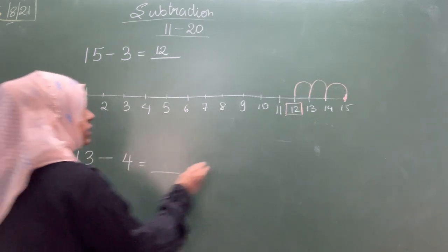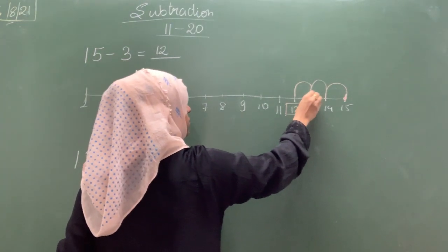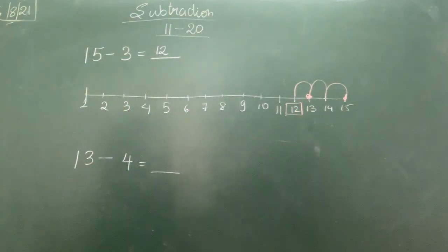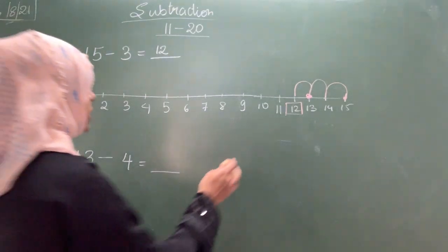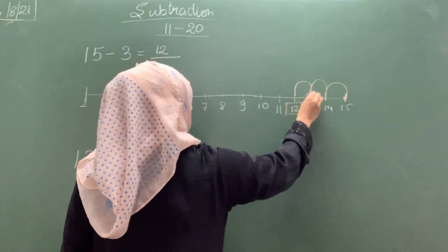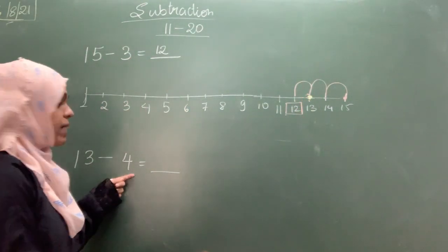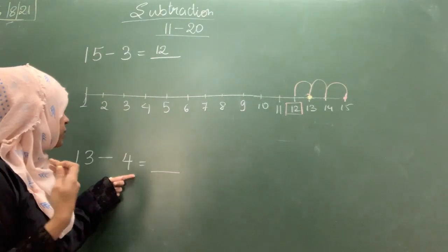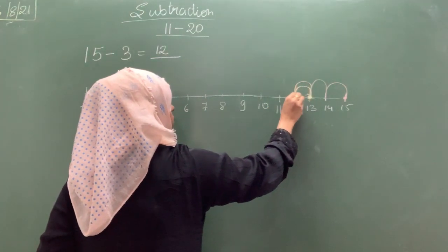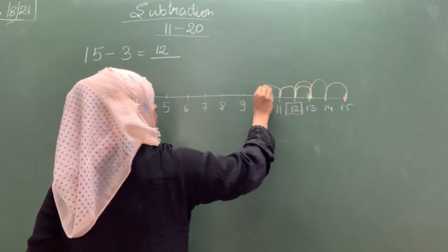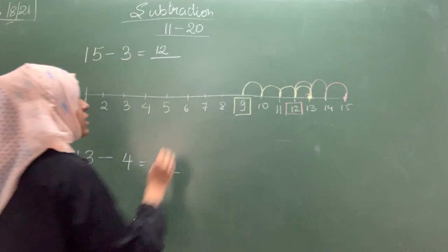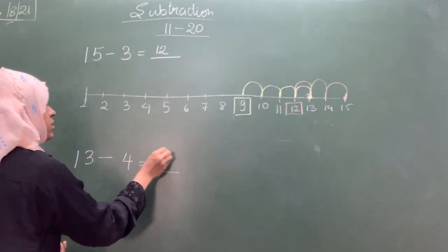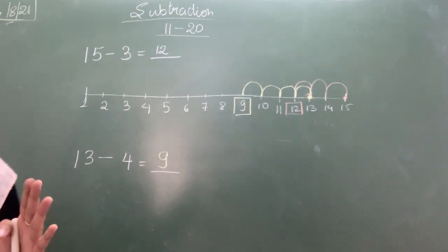Now where is 13? Mark the 13. I will do it on this one. Mark the 13. So mark the 13 number over here. It is here. And have to go back. Go back. How many steps? 4 steps. 1, 2, 3, 4. My answer is 9. So I am going to write here 9.